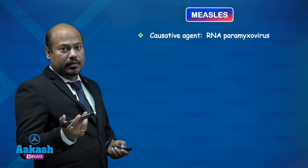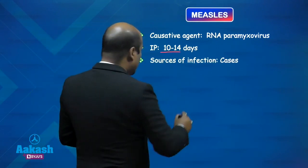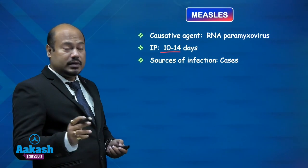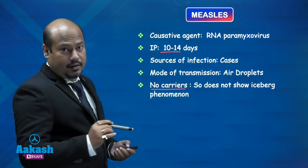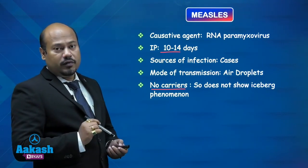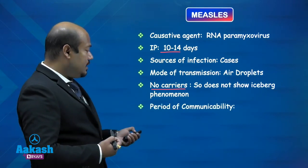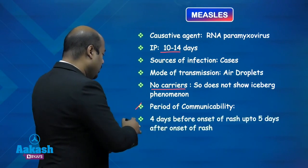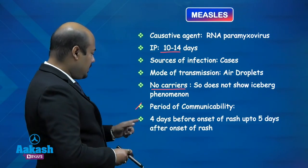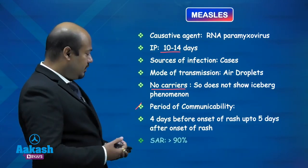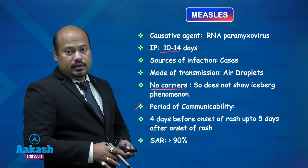Measles: the causative agent is an RNA paramyxovirus. Incubation period is 10 to 14 days. Source of infection is a case — there is no carrier in measles, so it does not show the iceberg phenomenon. Mode of transmission is airborne droplets. The period of communicability is four days before onset of rash to five days after onset of rash. The secondary attack rate is more than 90%, which is why it spreads rapidly as an epidemic.